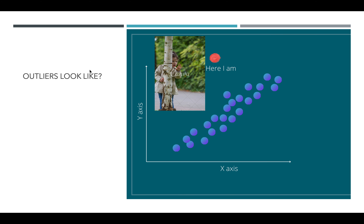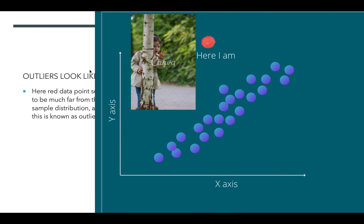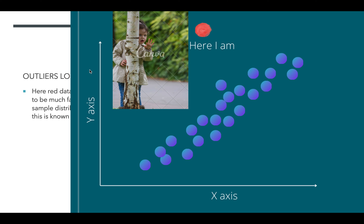So how do outliers look? The red data point seems to be much farther from the sample distribution — this is known as an outlier. Here, Anna was plotting a graph for the given data and suddenly noticed something irrelevant and was surprised. She is searching for the cause, and here we'll help her find it. Now let's understand some concepts, techniques, and terminologies related to dealing with outliers.